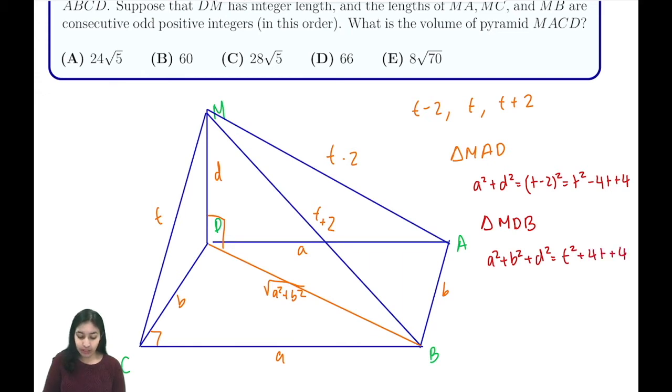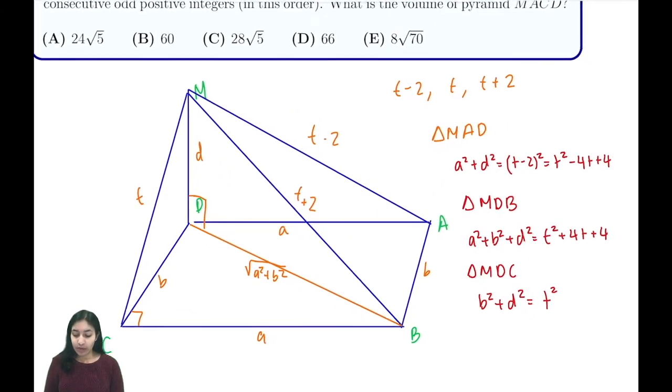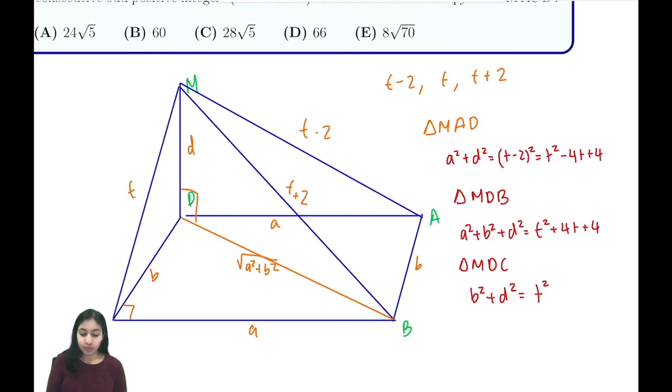And when we look at triangle MDC, we'll see that b² + d² equals t². So now we have these equations and what we want to do is find out what a, b, d, and t are. But we only have four variables and three equations, so that's a little bit difficult.